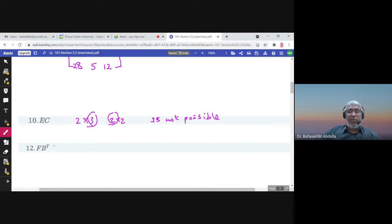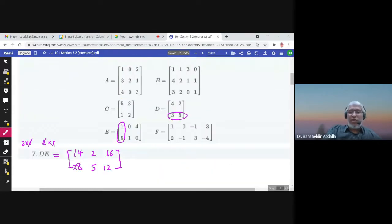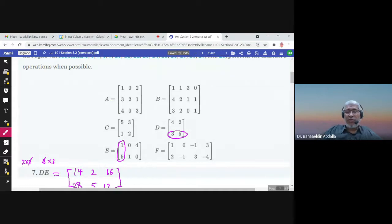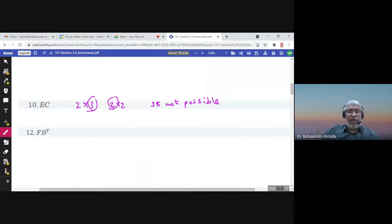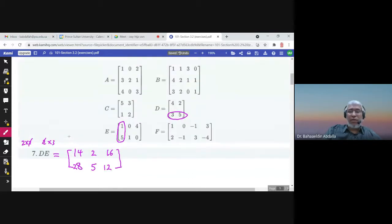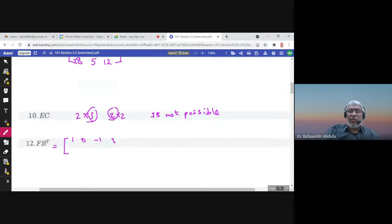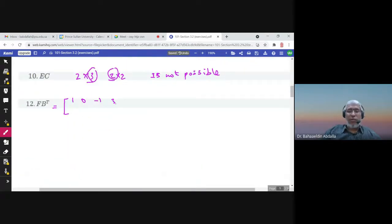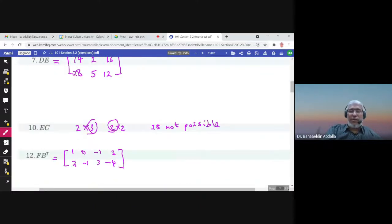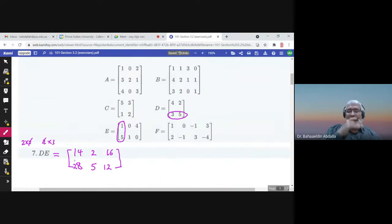F times B transpose. We need to find B transpose first. What is F? 1, 0, minus 1, 3, 2, negative 1, 3, negative 4. This is the matrix F. We need to multiply by B transpose.